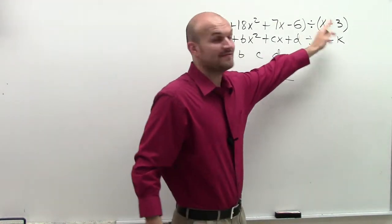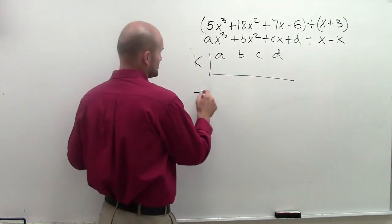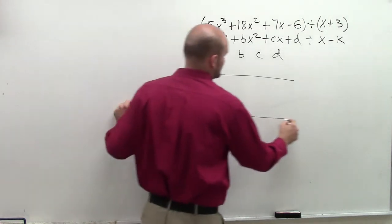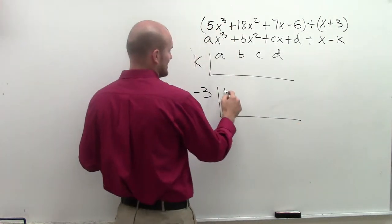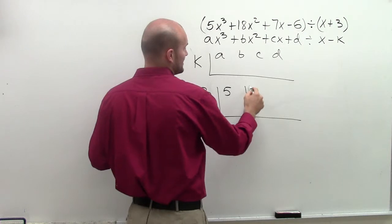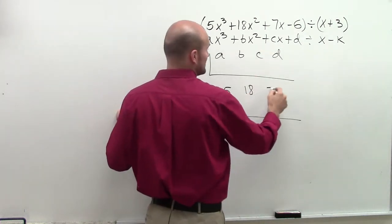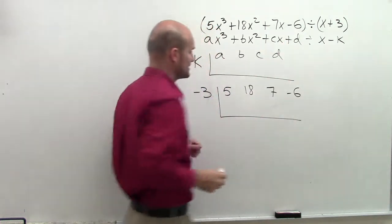So in this case, if I have x + 3, my k is going to be -3. My a in this case is 5, b is 18, c is 7, and d is -6.